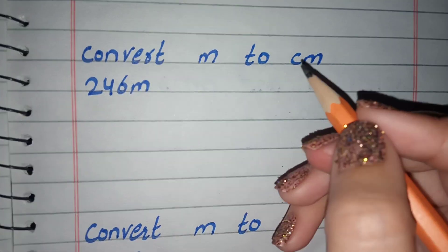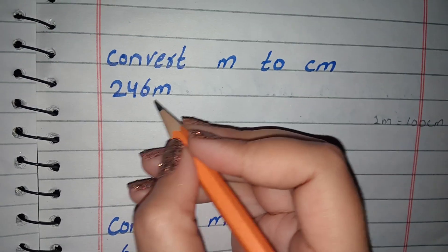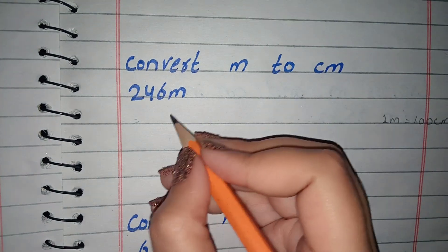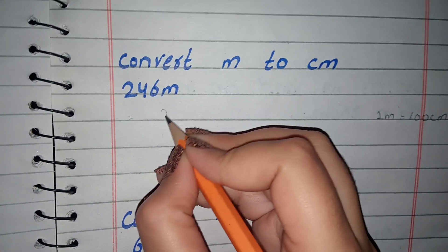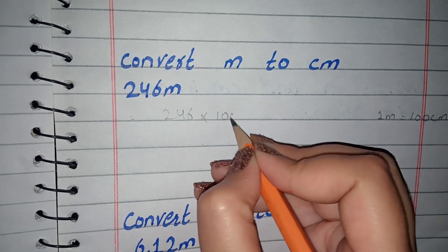I have made here M and cm. So what do we do when we convert to centimeters? The number is given. We have 246. We multiply it by 100.